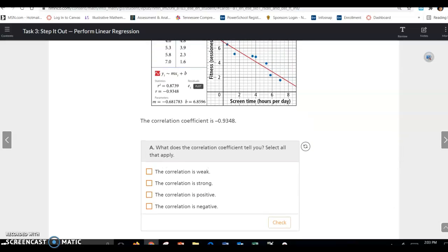So the correlation coefficient is whatever R is, and it says R is negative 0.9348. So what does the correlation tell you? Select all that apply. The correlation is strong because it's close to negative 1, and it is negative because it goes downhill from left to right, or as X's get bigger, Y's get smaller.